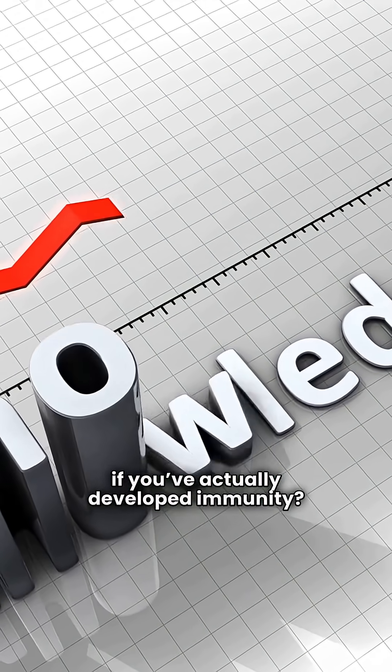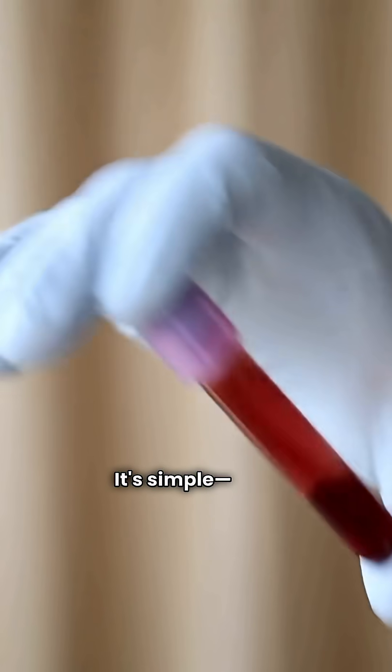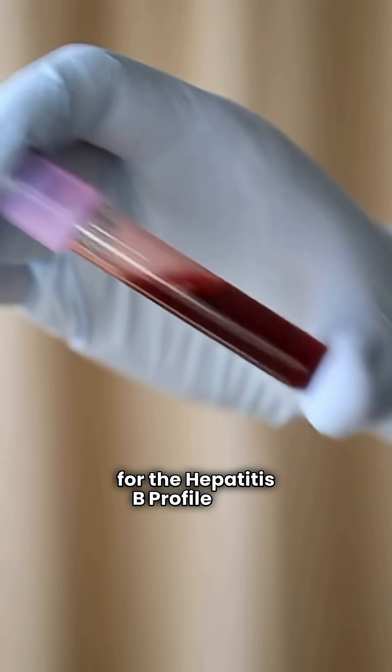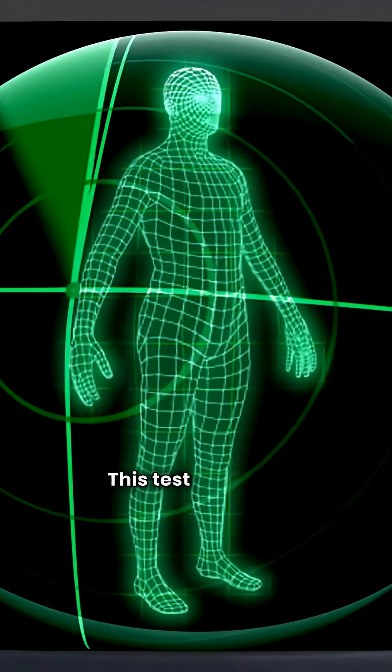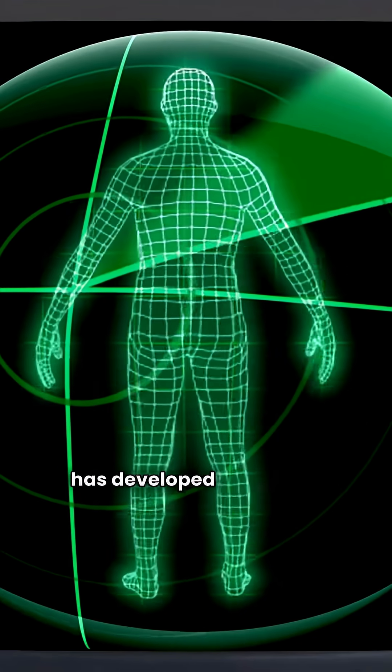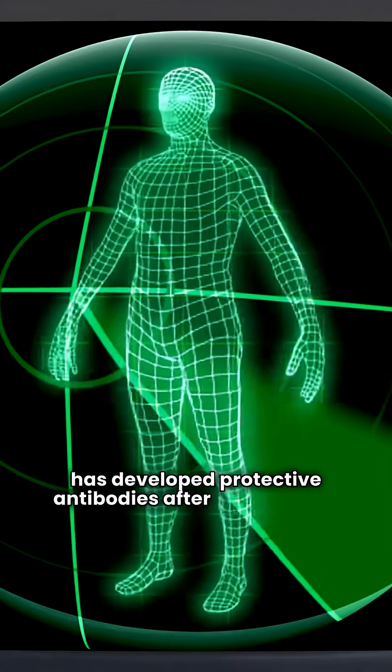So how do you know if you've actually developed immunity? It's simple. Visit a lab and ask for the Hepatitis B profile test. This test will show if your body has developed protective antibodies after vaccination.